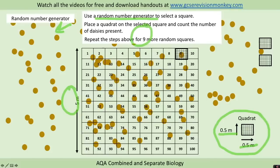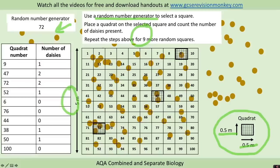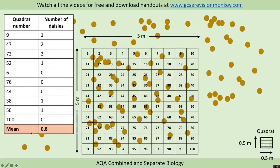We would then repeat that for another square - for example if our random number generator picked 47, we'd place our quadrat on 47 and count the daisies present. Again for example 72, counting the number of daisies present. We'd repeat that for around 10 squares and then calculate a mean number of daisies per quadrat.